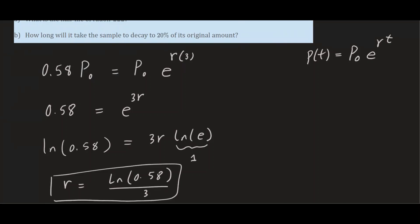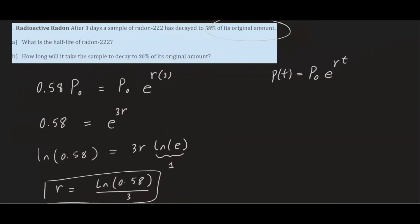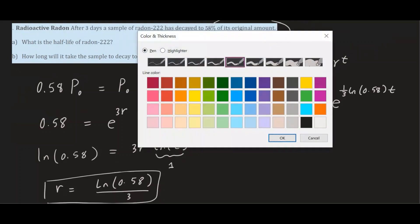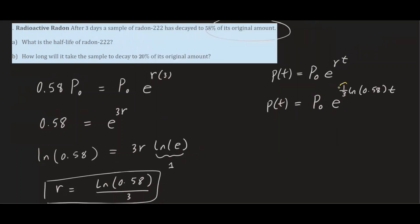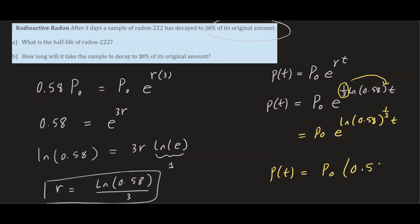Knowing r, we can write down the model. So P(T) = P₀·e^((1/3)·ln(0.58)·T). We bring 1/3 up as an exponent: P₀·e^(ln(0.58^(1/3))·T). Now e and ln cancel freely, so our model becomes P(T) = P₀·(0.58)^(T/3).